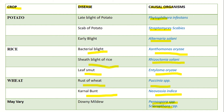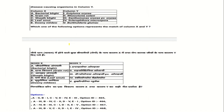Downy mildew is due to Sclerophthora. Bacterial blight is due to Xanthomonas oryzae. Sheath blight of rice is due to Rhizoctonia solani. Downy mildew is due to Sclerophthora.